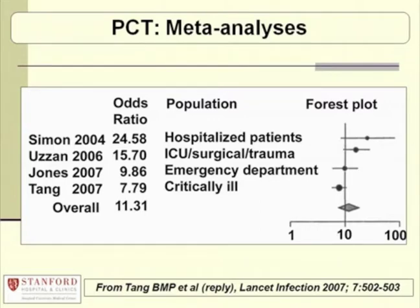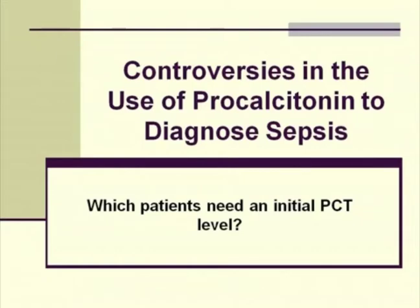Even in summary, the patient populations are all very different depending on how they are defined. With that background, I'm going to pose four major questions about the use of PCT to diagnose sepsis and what I've learned from reviewing the literature in this field. The first one is, I think, a key one: which patients need an initial PCT level?